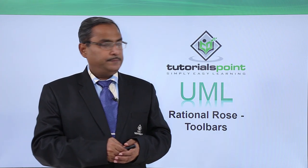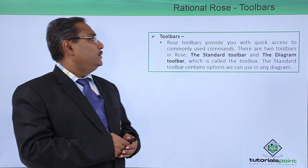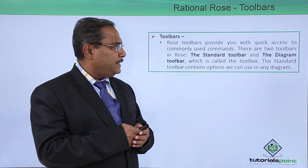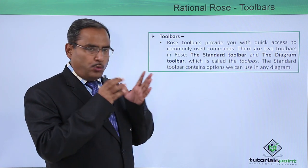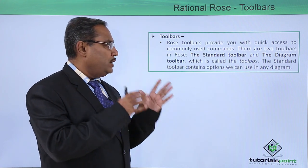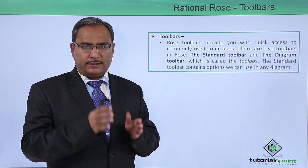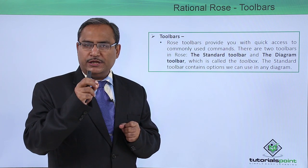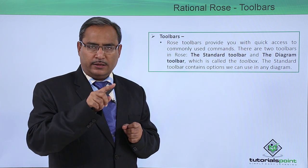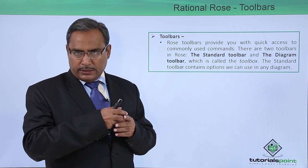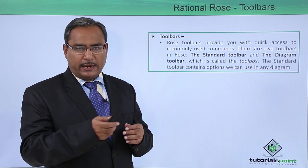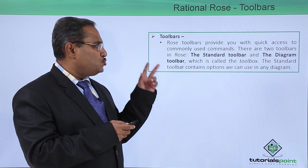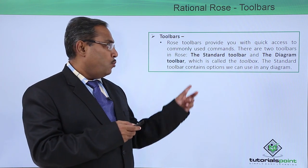Rational Rows Toolbars. Rational Rows provide you with the quick access to commonly used commands. Icons will be there, you can click on those icons and you can issue the command as well. So, there are two toolbars in Rational Rows.